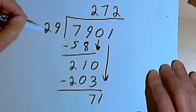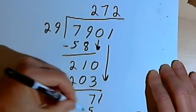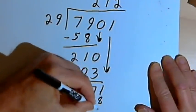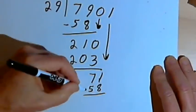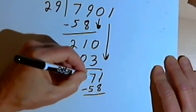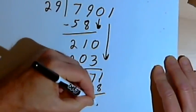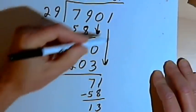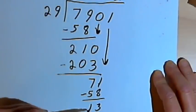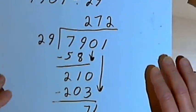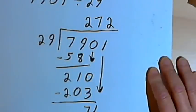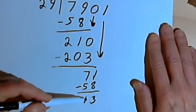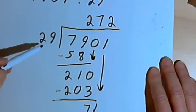So 2 times 29 for the multiplication part is 58. I'm ready to subtract. 71 minus 58 is 13. I've got no more numbers to bring down. So I've got a remainder of 13. And I'm going to write that as the fraction 13, in other words, the remainder divided by the divisor.